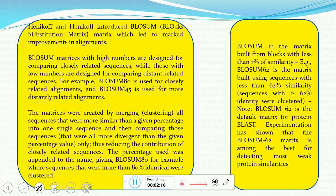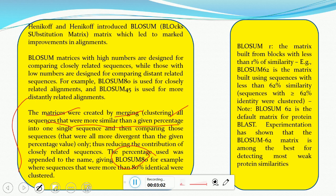To understand how the BLOSUM matrix is generated, we have to define a percentage identity value. Suppose we are generating a BLOSUM 80 matrix — we take all sequences showing greater than 80% similarity and merge them, then compare all sequences showing less than 80% similarity. The matrices were created by merging or clustering all sequences that were more similar than a given percentage into a single sequence.